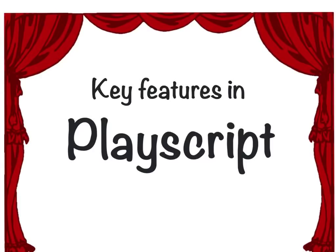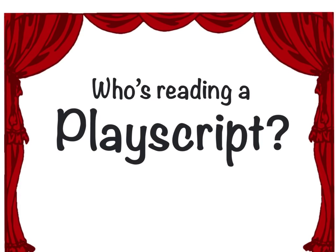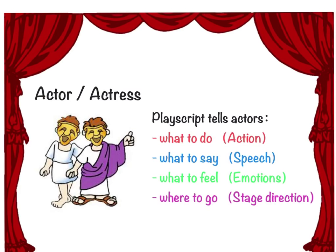In this video, I'm going to show you some key features in a play script. The first question you should ask yourself is: who is reading a play script — who are you writing it for, and why? A play script should be written for an actor or actress. Its function is to tell actors what to do, what to say, what to feel, and where to go. So in a play script you should find actions, speeches, dialogues, emotions, and stage directions.